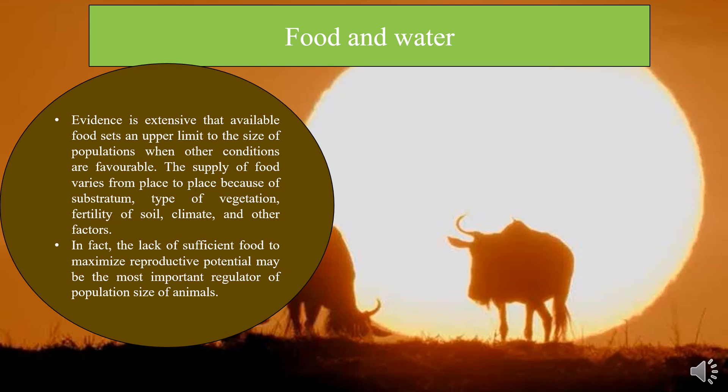The supply of food varies from place to place because of substratum, type of vegetation, fertility of soil, climate and other factors. In fact, the lack of sufficient food to maximize reproductive potential may be the most important regulator of population size of animals.